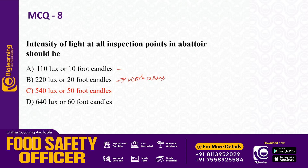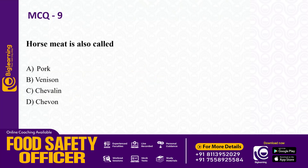Next question: horse meat is also called as — pork, venison, or chevalier. The answer is chevalier. Horse meat is called chevalier. Pork is pig meat; venison is deer meat.